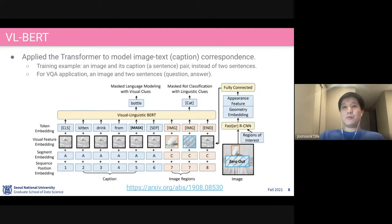The first model we are going to deal with is called VL-BERT. This was from 2019, so quite a recent model. They applied the transformer to model image text correspondence. Suppose you have a dataset of relevant image and text pairs. The training data is the image and its caption, which is the description of that image, which is annotated by humans.